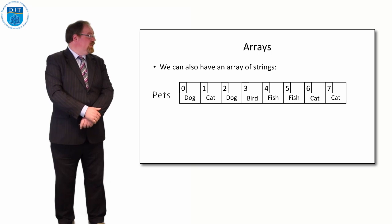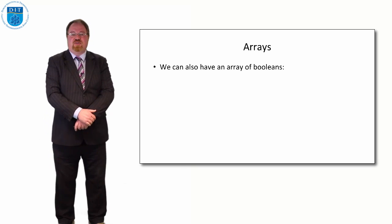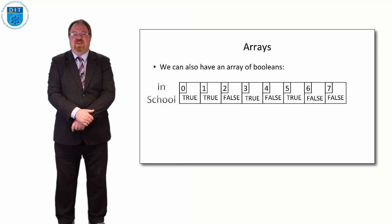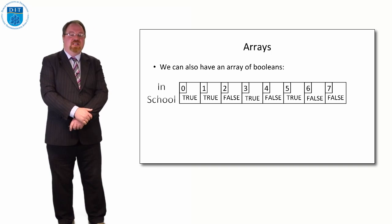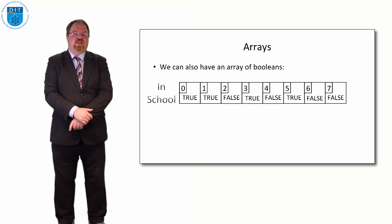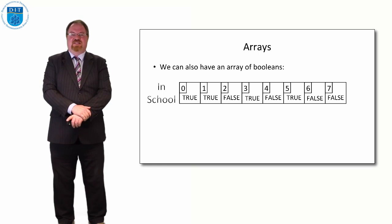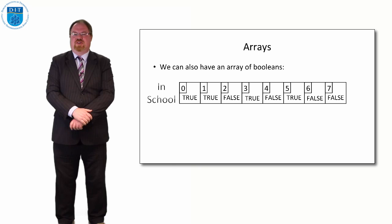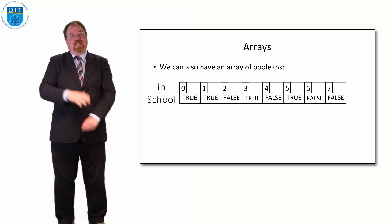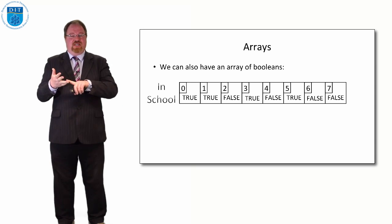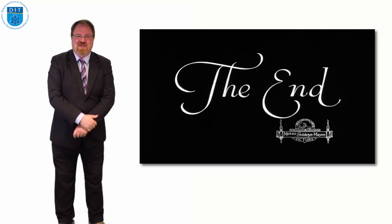Finally, we can have an array of booleans. A boolean only has true or false values — for example, recording whether students are coming into college. Student 0 is coming in, student 1 is coming in, student 2 is not, and so on. So just as we have simple variables of integers, reals, characters, strings, and booleans, we can have arrays of all those same types. That's it for this episode — thanks very much, we'll see you on the next one.